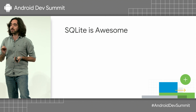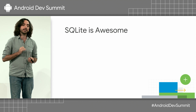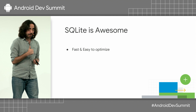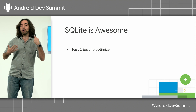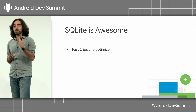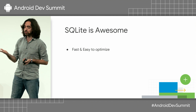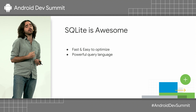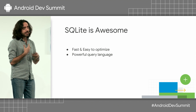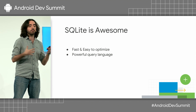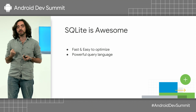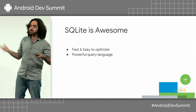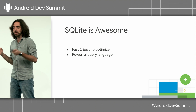On Android, we have SQLite, and SQLite is a really awesome technology. It's very fast, and when you need to optimize it for your use case, it's very easy to do so. It's a very powerful query language — you can express many different things, make it concise, and easily grab the data. That's the biggest advantage compared to other object stores or key-value stores.